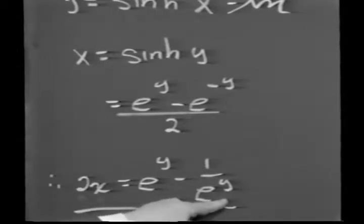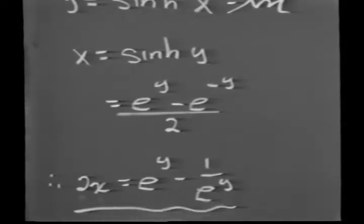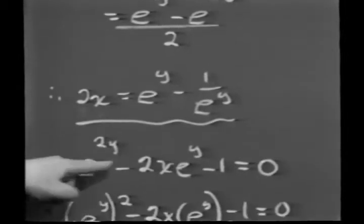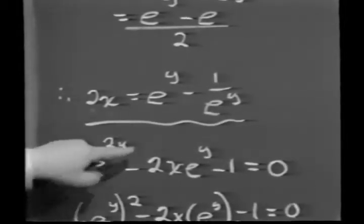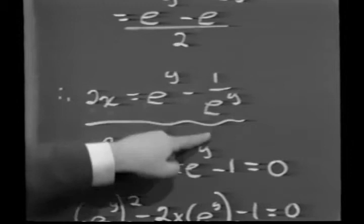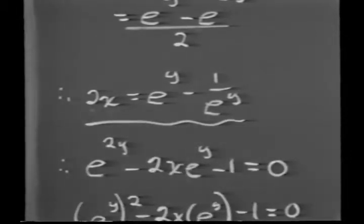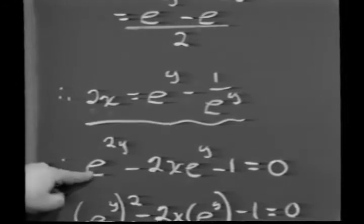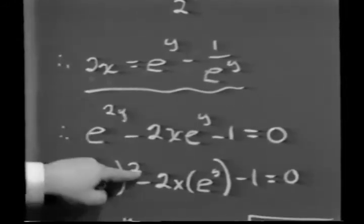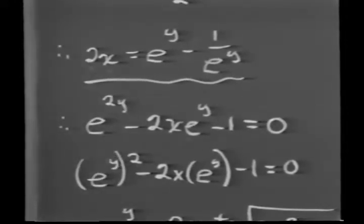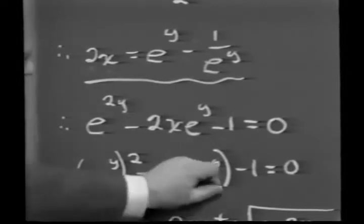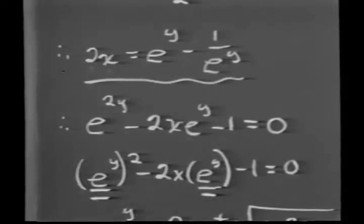And multiplying through by e to the y to clear my denominators, I wind up with e to the 2y minus 2x e to the y minus 1 equals 0. And if I now recall that e to the 2y is the square of e to the y, observe that what I now have is a quadratic equation in e to the y.